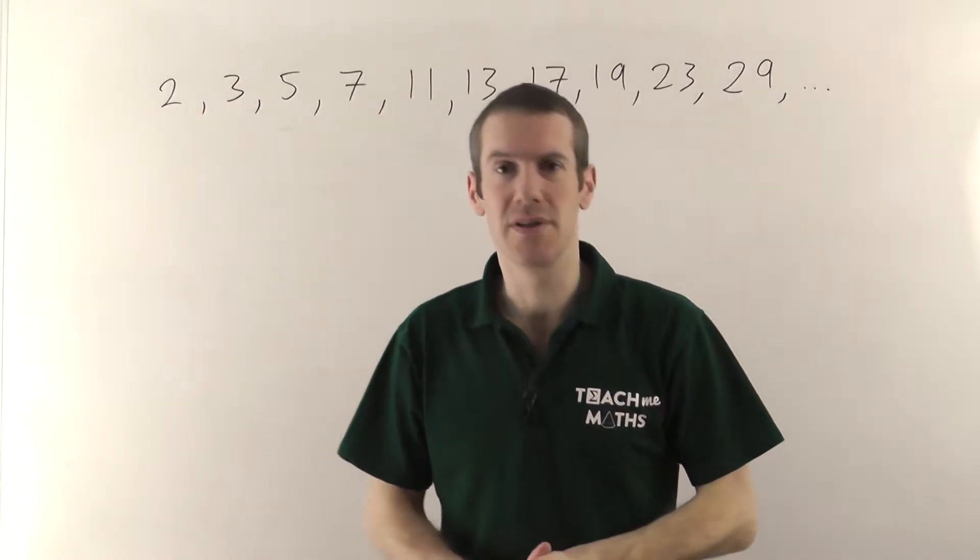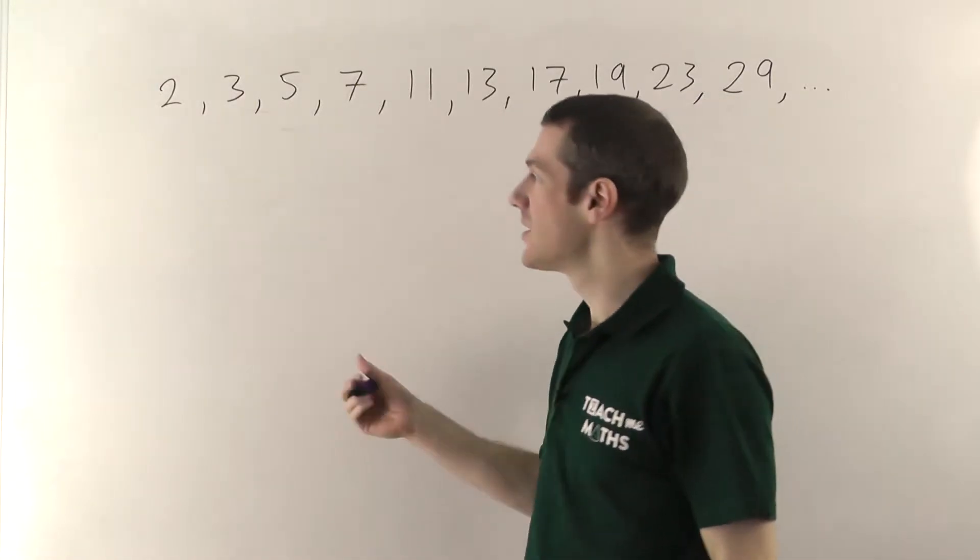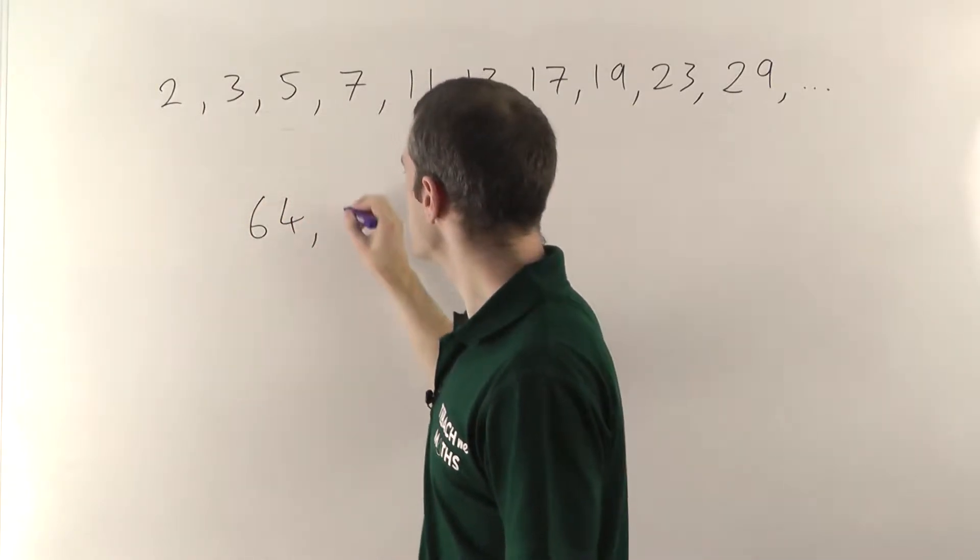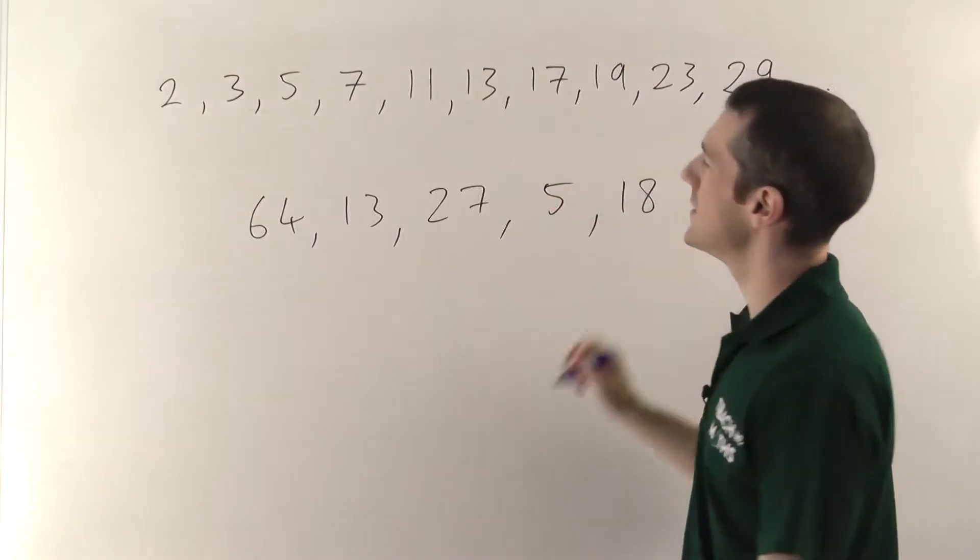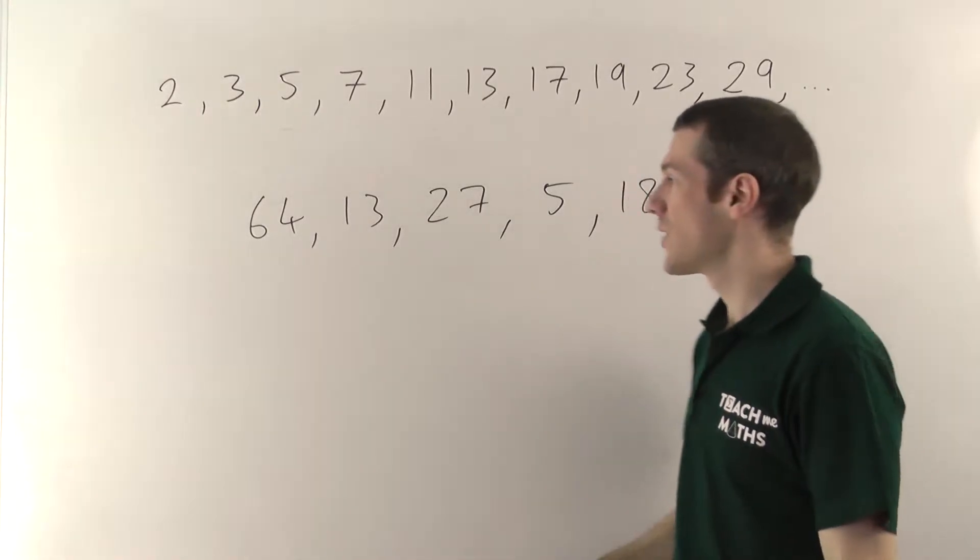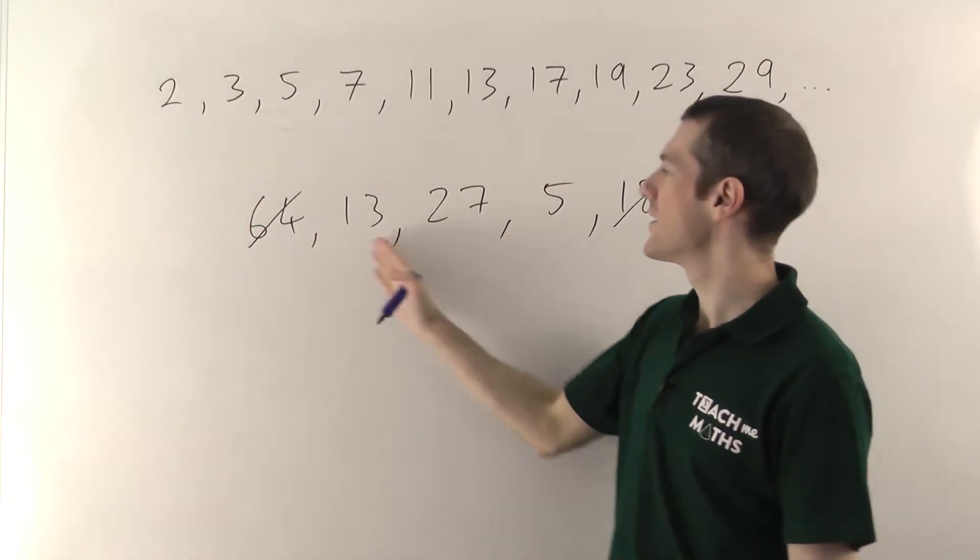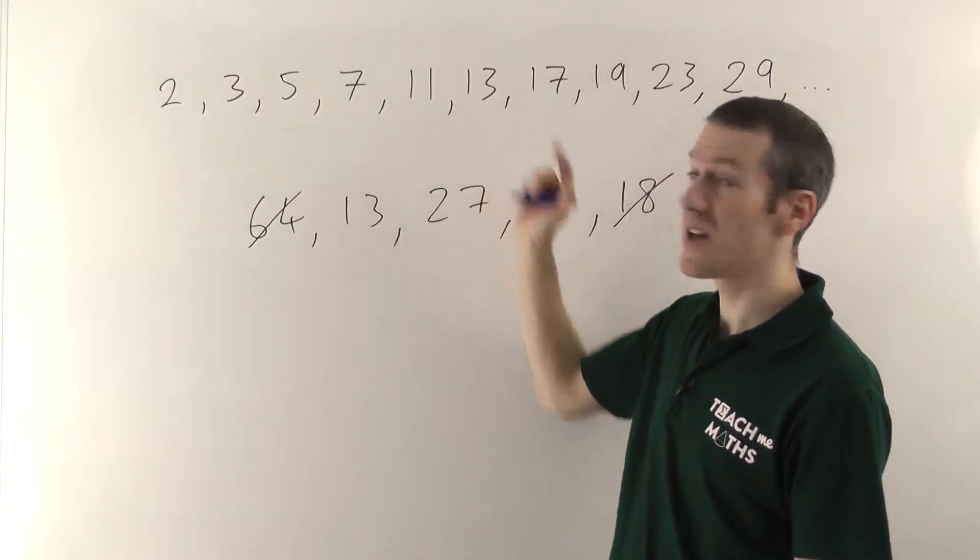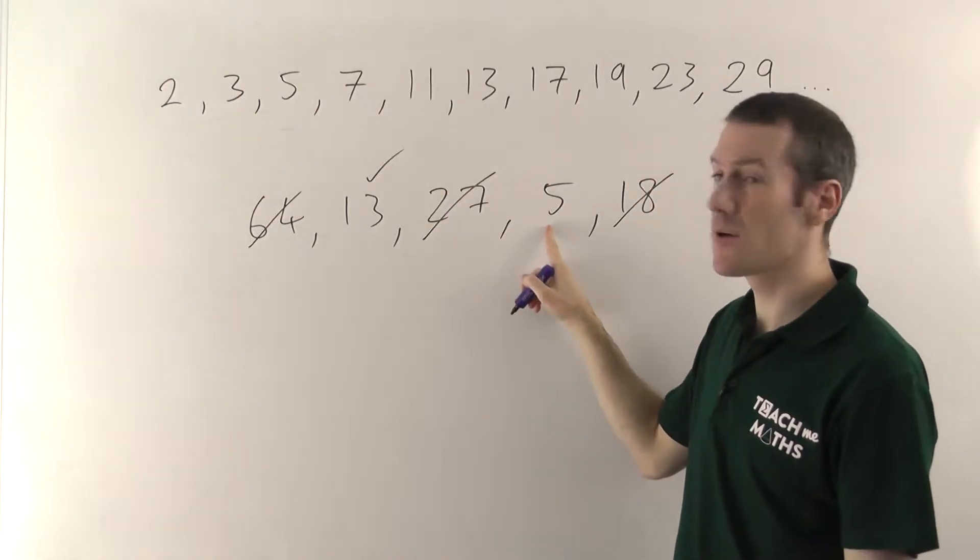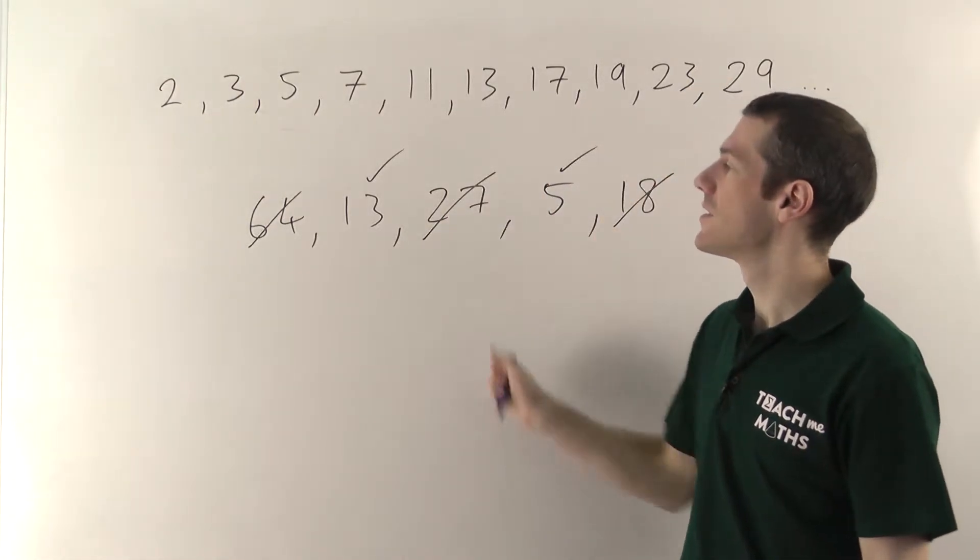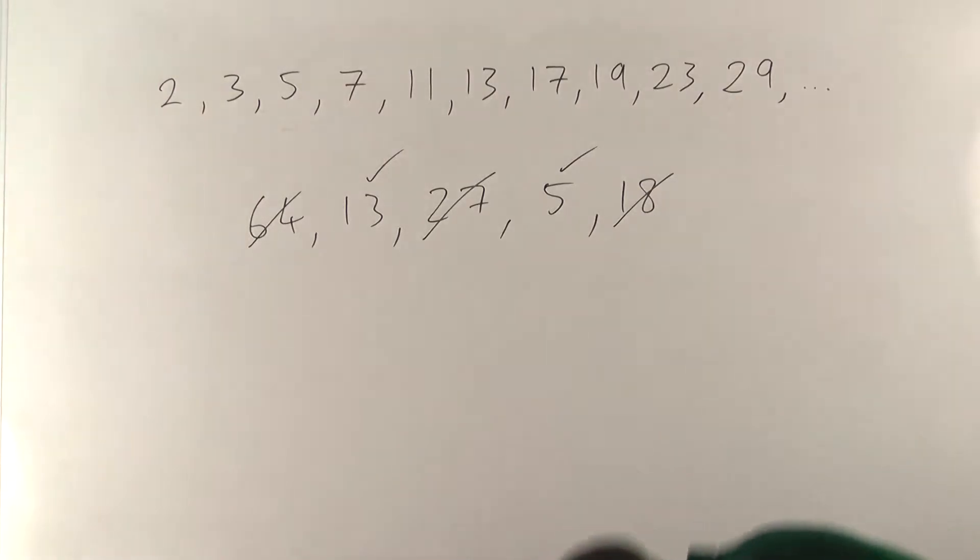Now in terms of using prime numbers, if you ever get asked a question about a prime number, you might be given like a list of numbers and asked to pick out which ones are prime. So, if you were given 64, 13, 27, 5 and 18 or something, and you had to pick out which of these numbers are prime, well you just have to think to yourself, does any number divide into these? First of all, you can ignore all the even numbers, they can't be prime. And then look at the rest, does anything go into 13? Nope, that's prime. Does anything go into 27? Yes, 3 and 9, so that's not prime. Does anything go into 5? Nope, so that's prime. So that's how you pick out prime numbers from a list, you just need to ask, does anything else go into it? Let me get my board rubber off the floor.